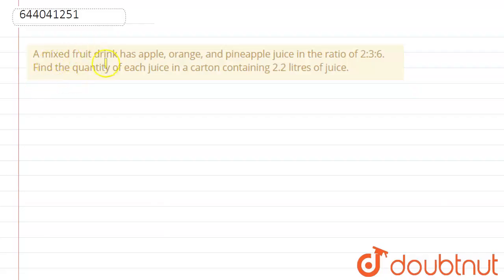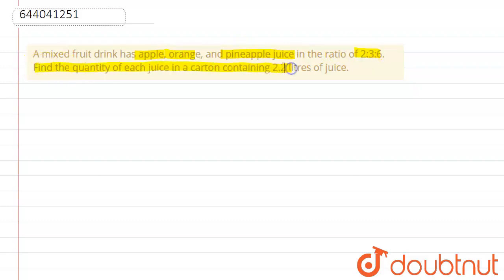Hello friends. Here the question is: a mixed fruit drink has apple, orange, and pineapple juice in the ratio 2:3:6. Find the quantity of each juice in a carton containing 2.2 liters of juice.